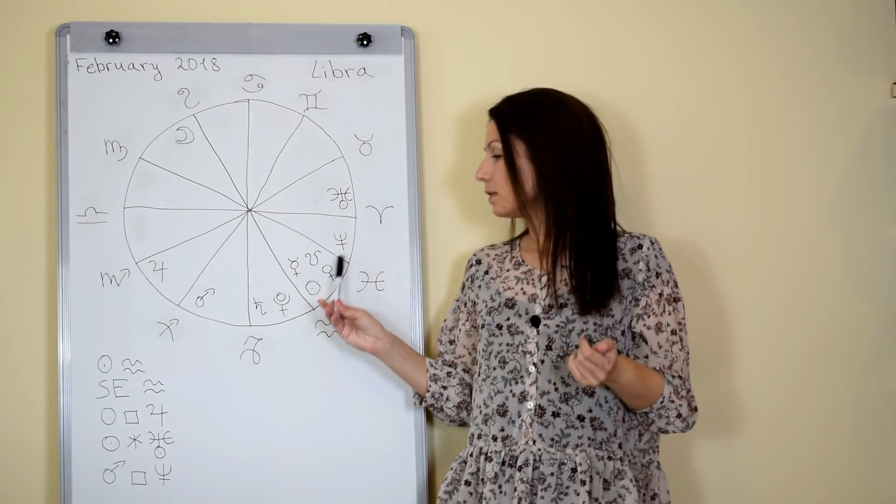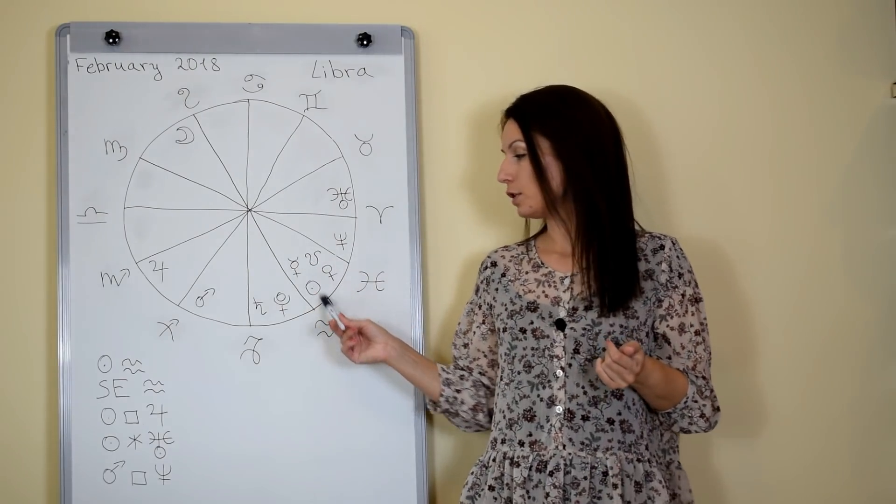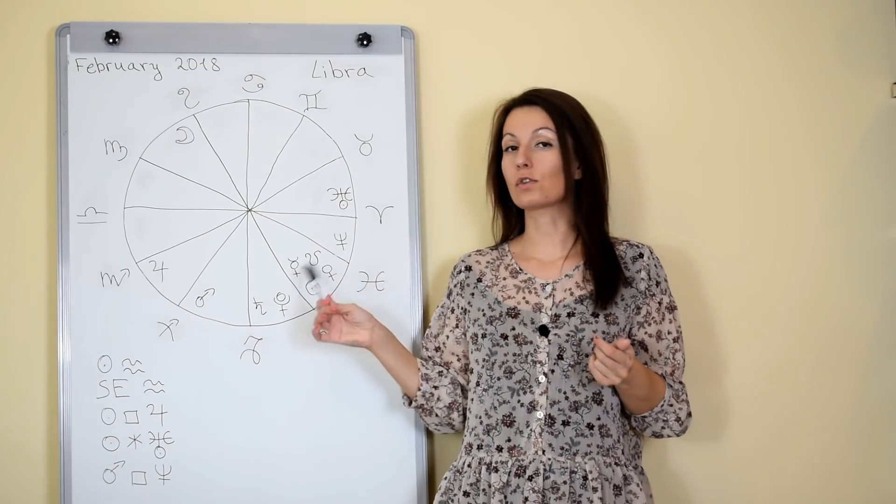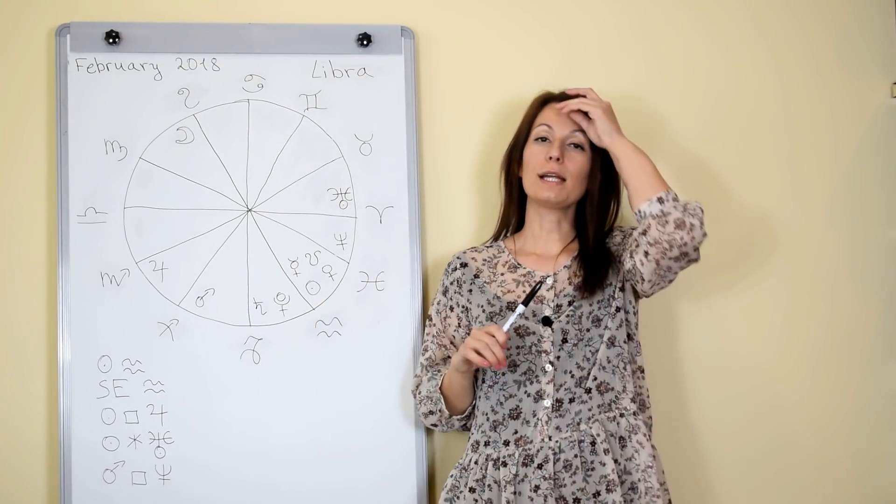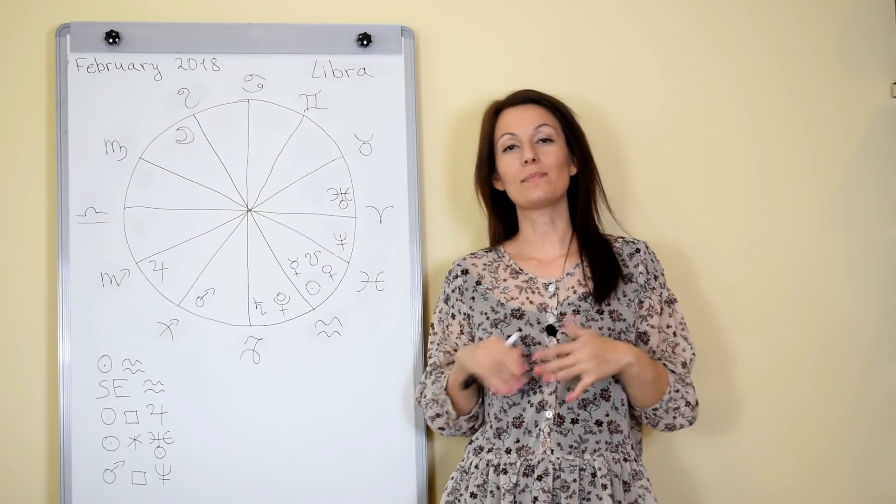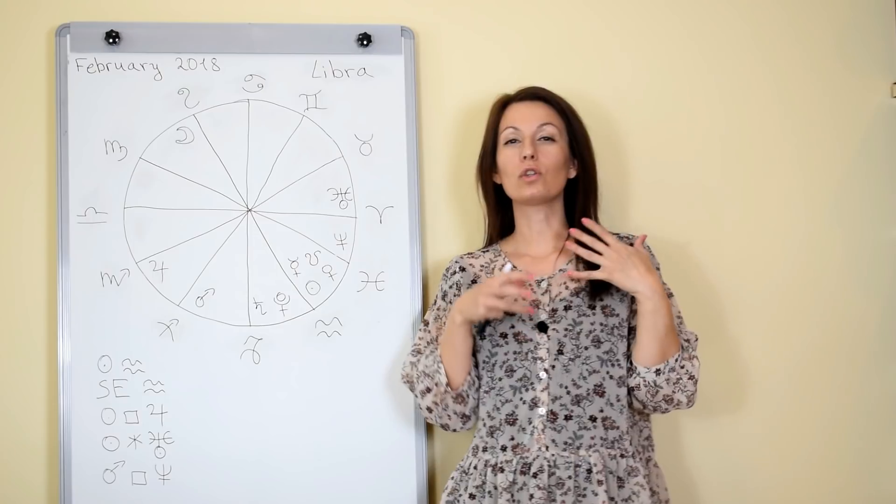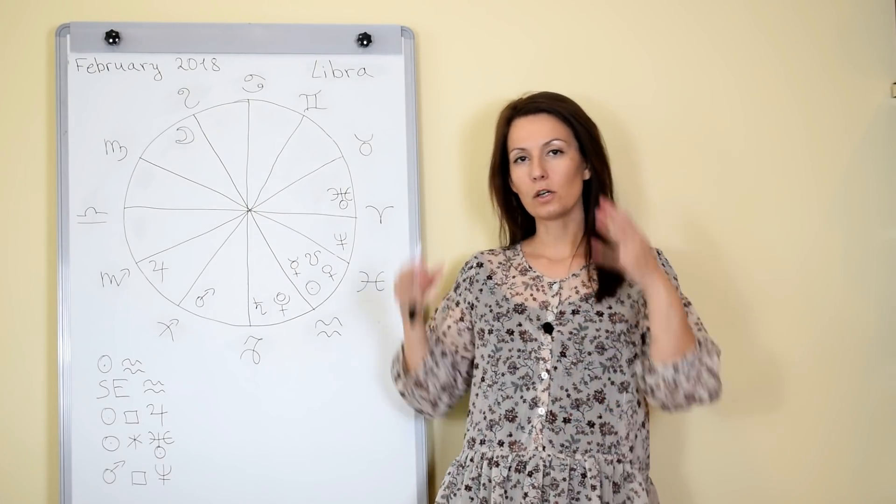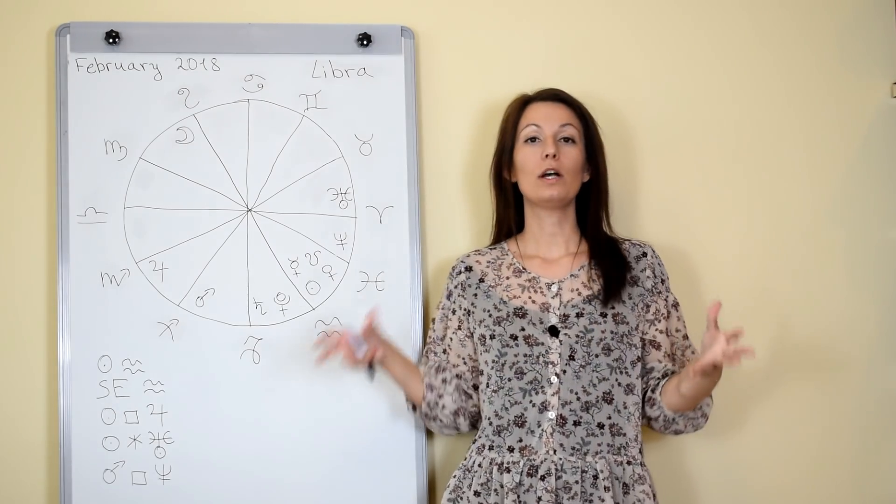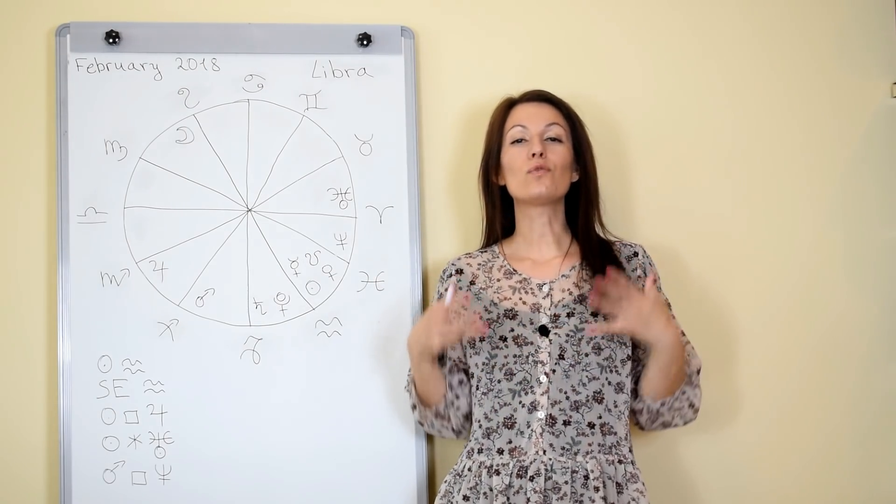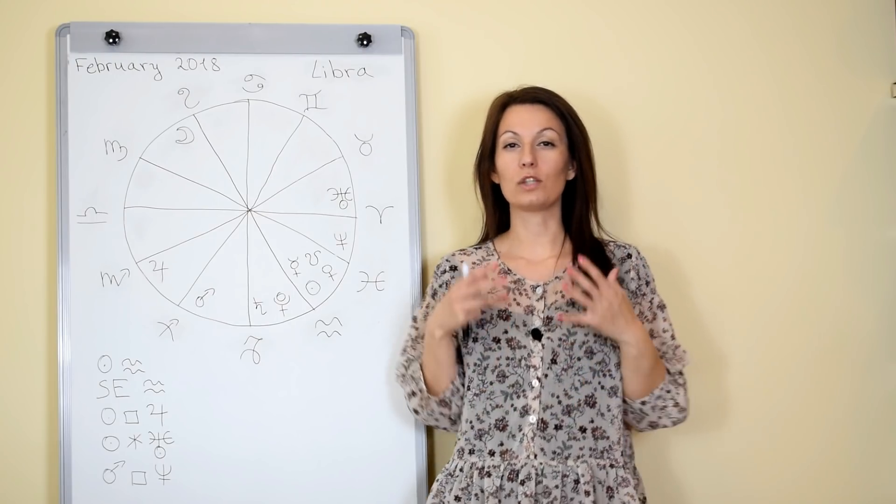So in this case we have the south node here in conjunction with the new moon or included in the solar eclipse which means that it might be a time to separate with something. It might be the time to leave something in the past or to give up on something and this is actually something good because it allows you to open up to the new events in your life, to the future and to be ready to separate with your past.